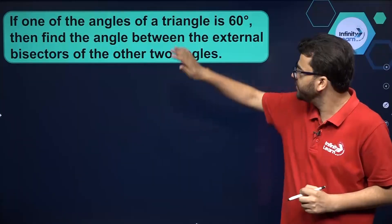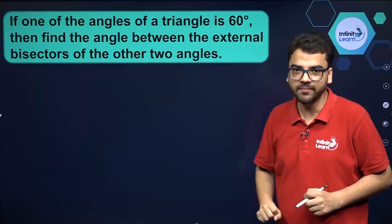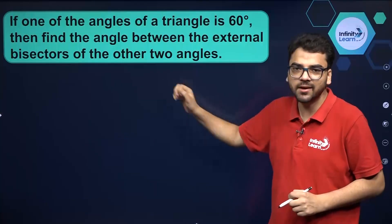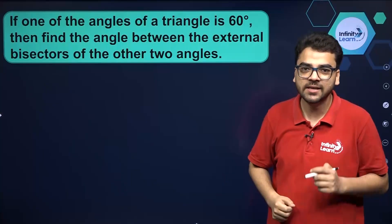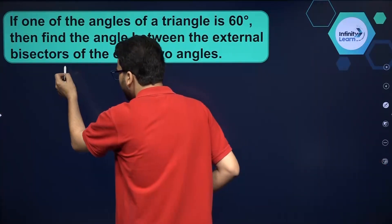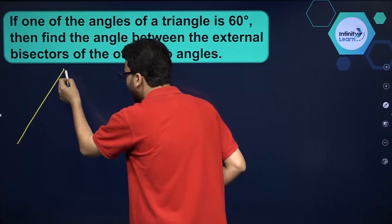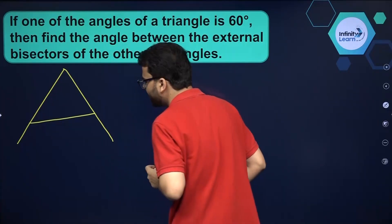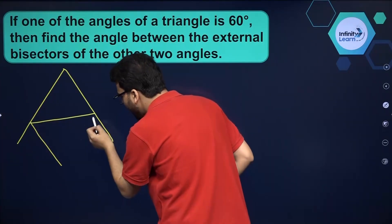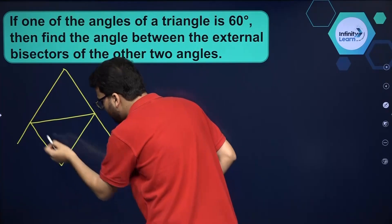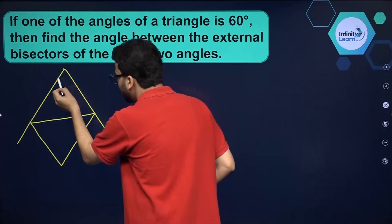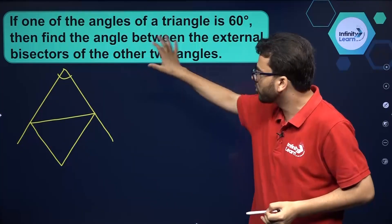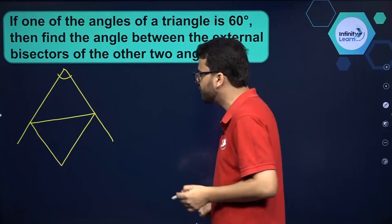We have a question in which an angle of a triangle is given, and we have to find the angle between the external bisectors of the other two angles of that triangle. Let us make a rough figure. Basically, you have been given a triangle whose two sides are extended, and you have to find the angle between the external bisectors of these two angles. Let us first understand the general situation instead of talking about the specific question first.